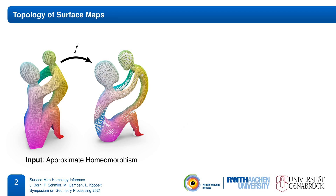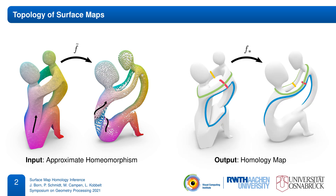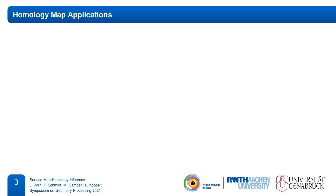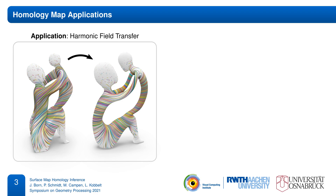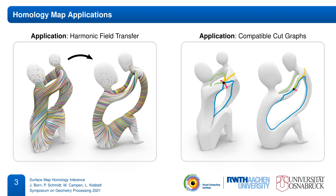It also captures deliberate topological features of the input map. For example, if the input indicates a twist around a handle, then this twist will also be inferred in the homology map. Such homology maps can then be used to transfer data between the two shapes or to guide the construction of compatible surface decompositions.